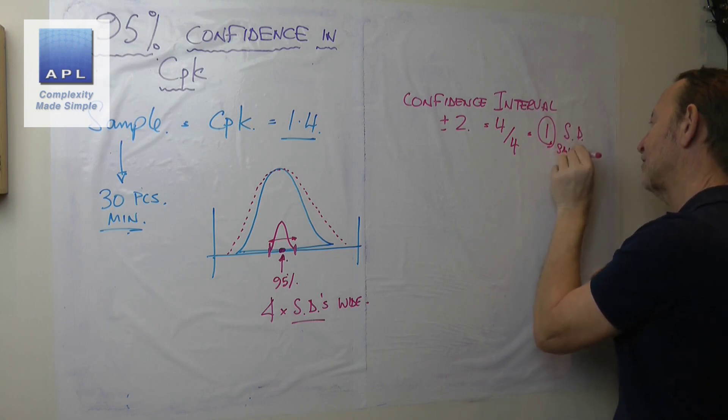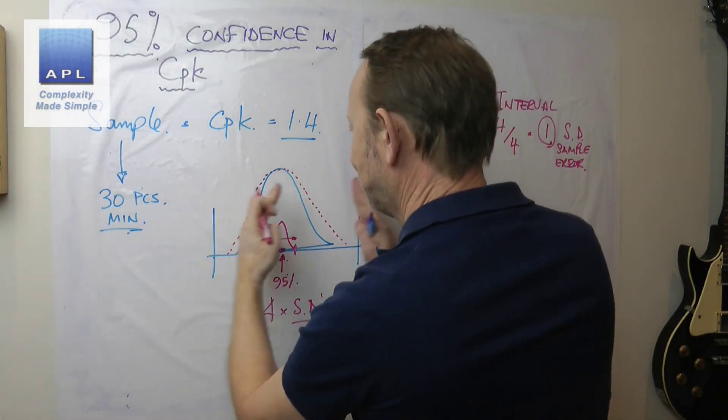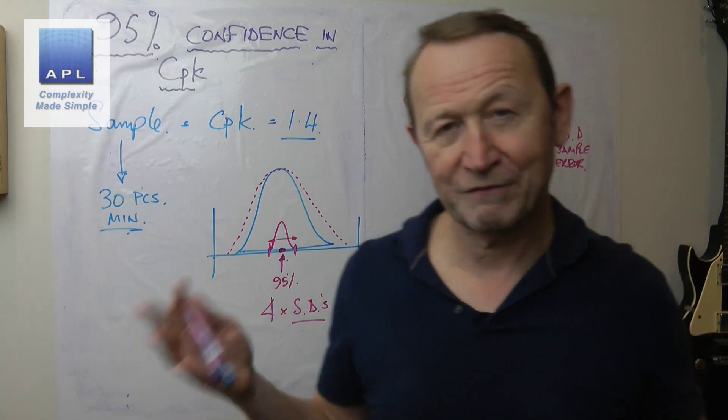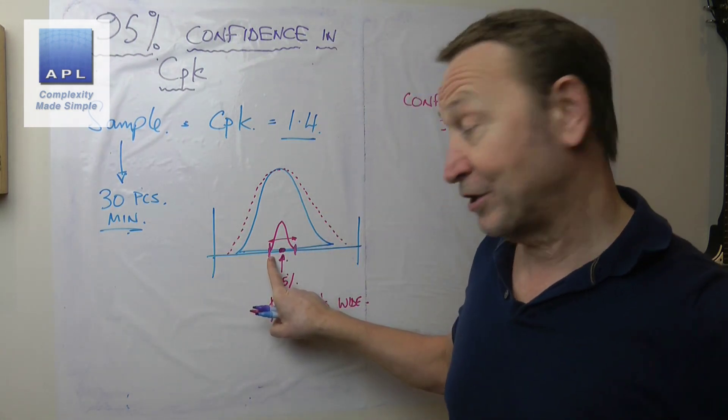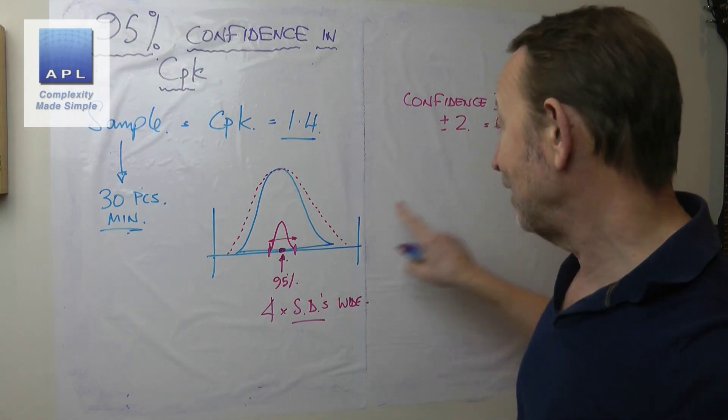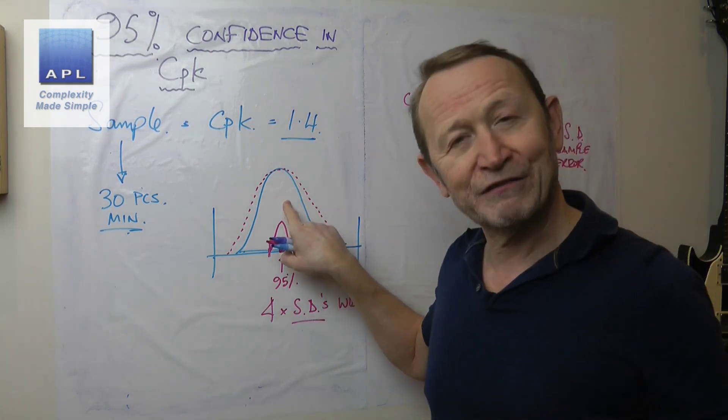This thing could be doing that a little bit just by the fact that I'm sampling. Now what I'm going to do is add that number to the original standard deviation I got here.